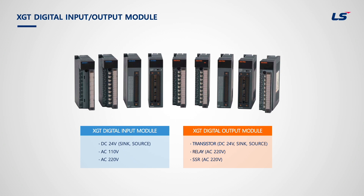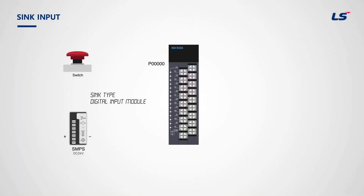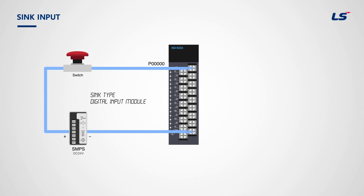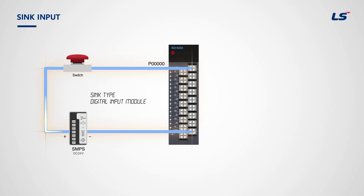Let's take a look at digital input. This is a sink type digital input module. For the sink type input module, the COM terminal — which is the common terminal for the PLC input module — is connected to DC 0 volts power source. The current flows from positive to negative, so the current flows into the PLC when the switch connected to the PLC input is turned ON. When you push the switch, the current flows into P0 and the number 0 bit becomes ON. Remember that the zero voltage of the SMPS is connected to COM.